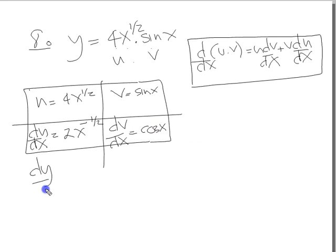Now we can write dy dx then. So dy dx equals u times v dx, here we go, 4x to the half times cos x plus v du dx. So I'm going to put the second term first and the first term second in that product, yeah?